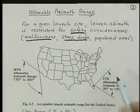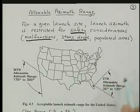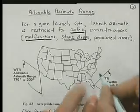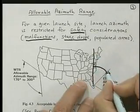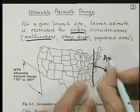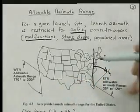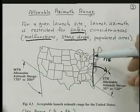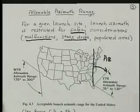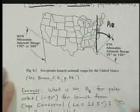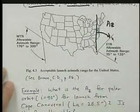In the eastern test range or Cape Canaveral, the allowable azimuth ranges from thirty five degrees to one twenty. Remember that the azimuth angle is measured from straight north. You can be as small as thirty five degrees. This is from Charles Brown's book.